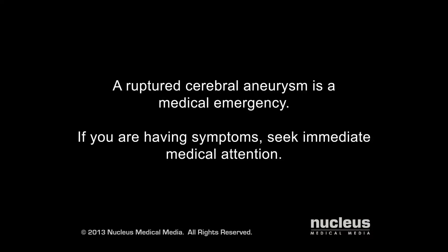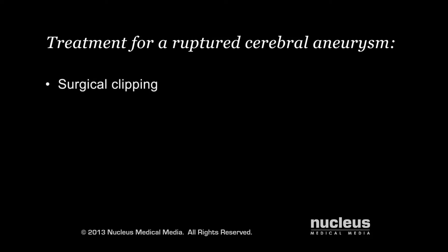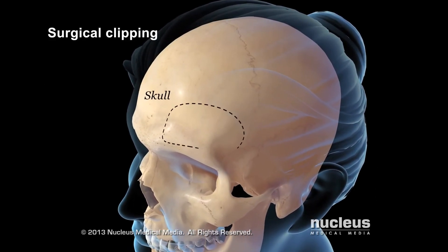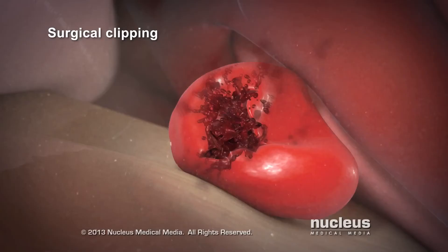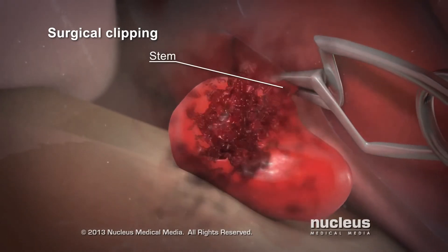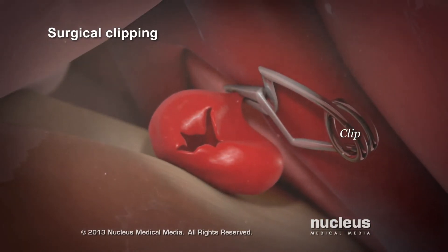A ruptured cerebral aneurysm is a medical emergency. If you are having symptoms, seek immediate medical attention. If you have a ruptured cerebral aneurysm, your doctor may recommend surgical clipping or endovascular coiling. In surgical clipping, your surgeon will make an opening in your skull near your aneurysm and place a small metal clip onto the stem that connects the aneurysm to your artery. The clip blocks blood flow into your aneurysm.